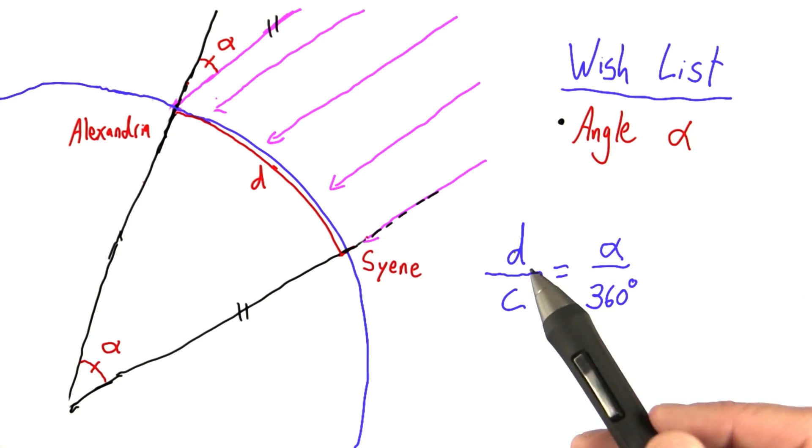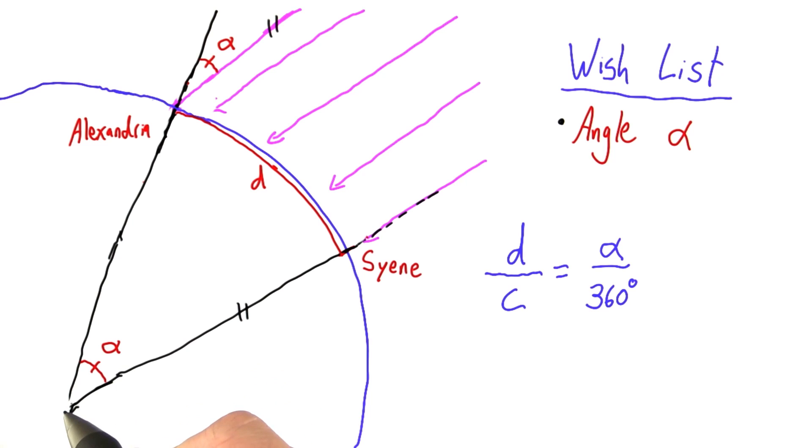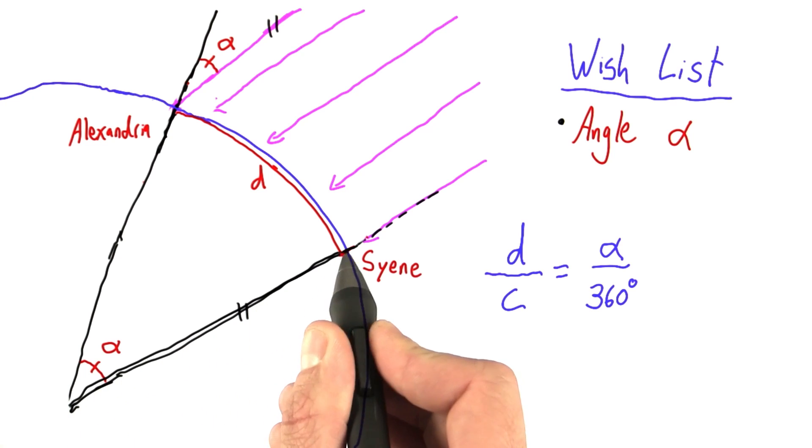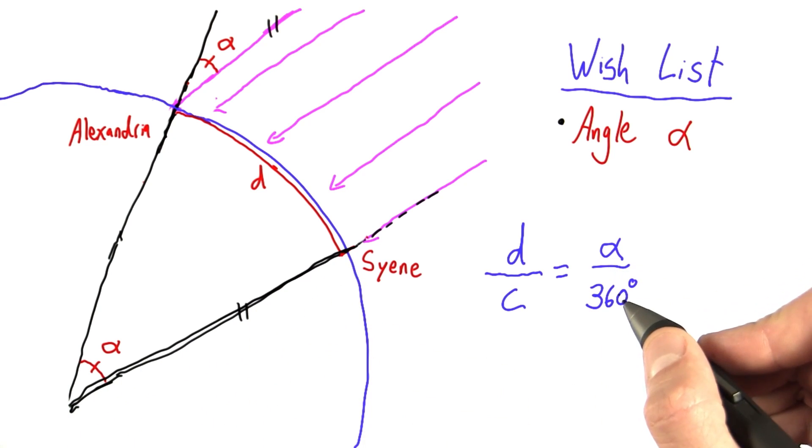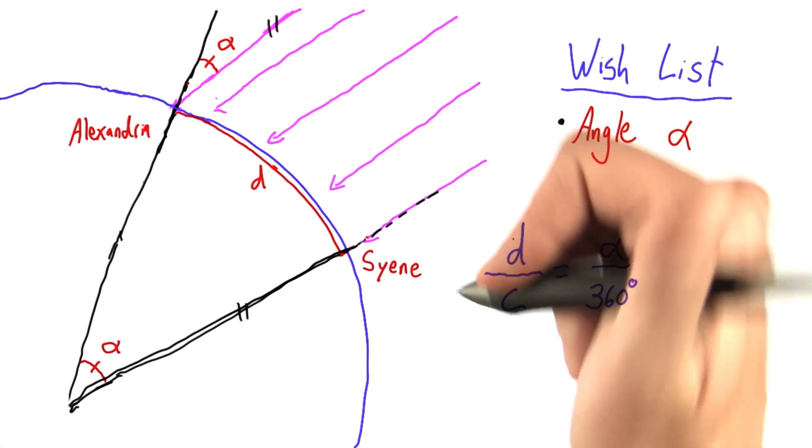A good way to confirm that this equation makes sense is let's think of some limiting cases. What if alpha were 0? So that would be a really tiny angle, covering absolutely no distance. 0 over 360 equals 0. That would mean this length would have to be 0 as well. Good.